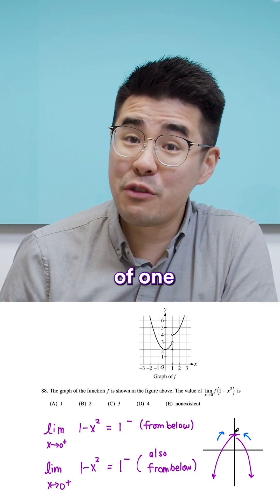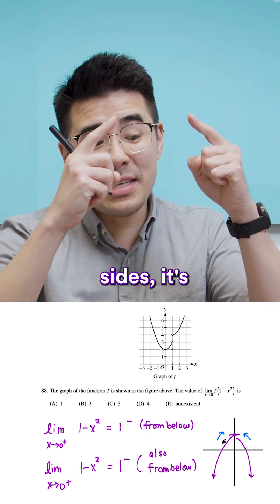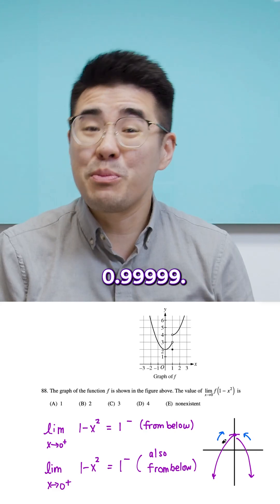Here's a graph. Maybe that provides a little bit more context. You can see that this is the graph of 1 minus x squared. And as you get closer and closer from both sides, it's going to approach 1 from underneath, 0.99999.